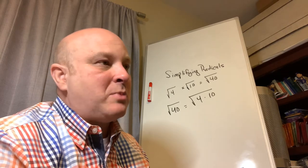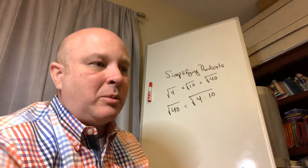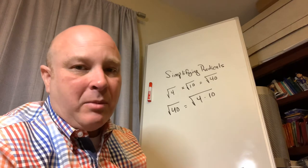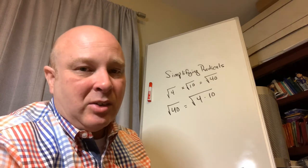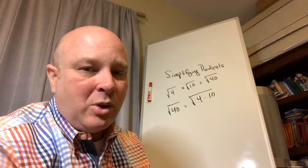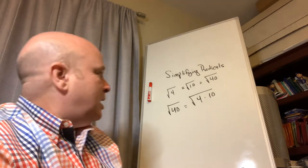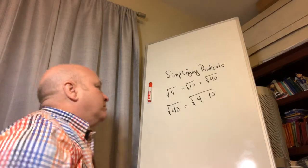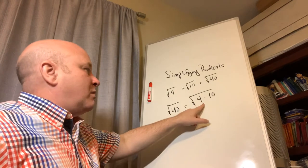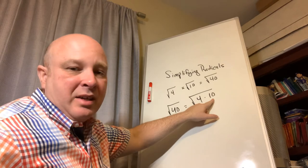It's going to be very important that you memorize your perfect squares: 1 times 1 is 1, 2 times 2 is 4, 3 times 3 is 9, 4 times 4 is 16, and so on. You should have your 12s memorized already, but go ahead and memorize probably up to the 15s — that'll be helpful.